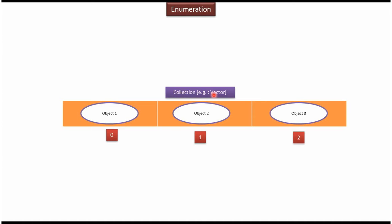Suppose I have a vector collection and it has three objects, and I want to get each object one by one. Then I can call hashMoreElements method of enumeration. This method will check whether vector has more elements. If it has more elements, this method will return true. And using nextElement method, we can get this object.